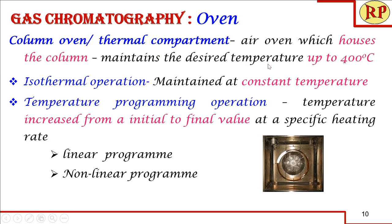Next is the oven or thermal compartment, which houses the column and maintains the desired temperature up to a maximum of 400 degrees centigrade. We can use isothermal operation, maintaining a constant temperature throughout, or program the temperature — either a linear program increasing from an initial to a final temperature at a constant rate, or a non-linear program with ramp and stage-wise temperature increases and holds. Temperature programming gives better resolution when many components with closer boiling points are present.